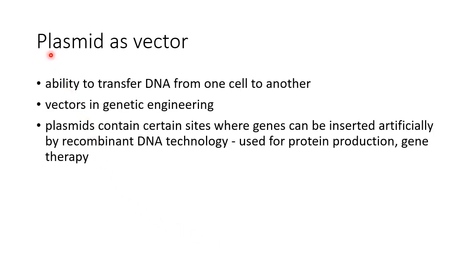Plasmids are used as vectors in genetic engineering. Plasmids have the ability to transfer DNA from one cell to another, so they are used as vectors in genetic engineering. Plasmids contain certain sites where genes can be inserted artificially by recombinant DNA technology. This is used for protein production and gene therapy.